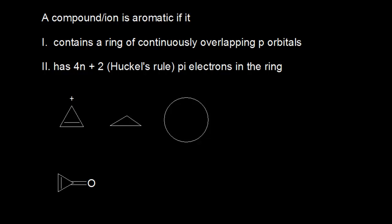We have seen that a compound or ion is aromatic if it contains a ring of continuously overlapping p orbitals, and also if it has 4n plus 2 pi electrons in the ring, where n is an integer. So for example, n could be 0, or 1, or 2.